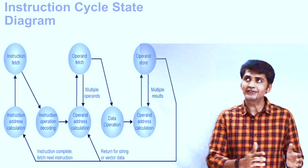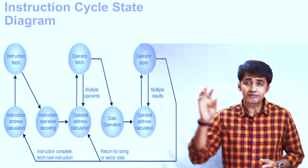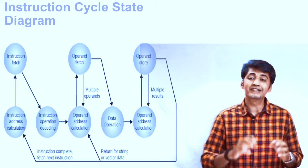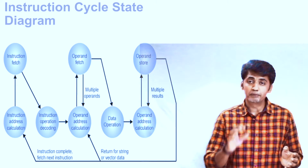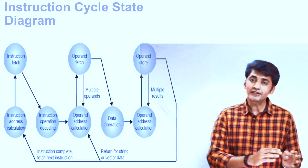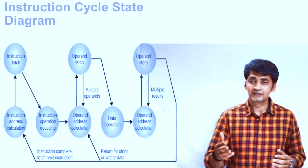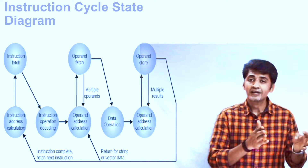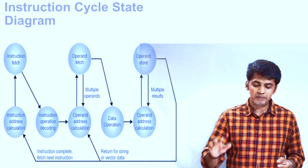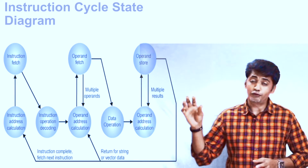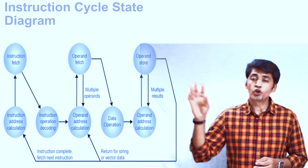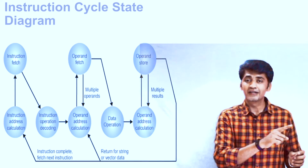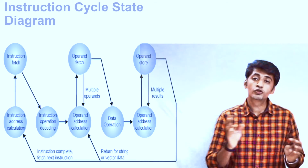The fifth step is operand fetch — after address calculation, the operand is fetched to the particular register. Then the processor performs data processing: the operation is performed on the operands and a result is produced. That result, in the form of an operand, is stored back in the particular memory location — so the address is calculated and the operand is stored. After storing, it goes back to check the program counter for the next instruction to be fetched.